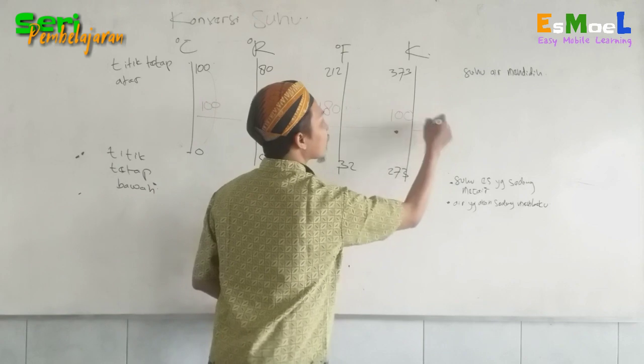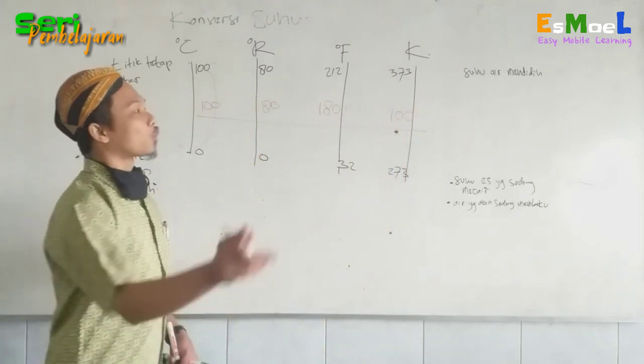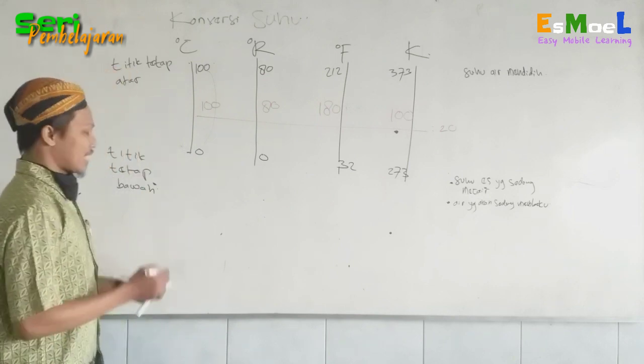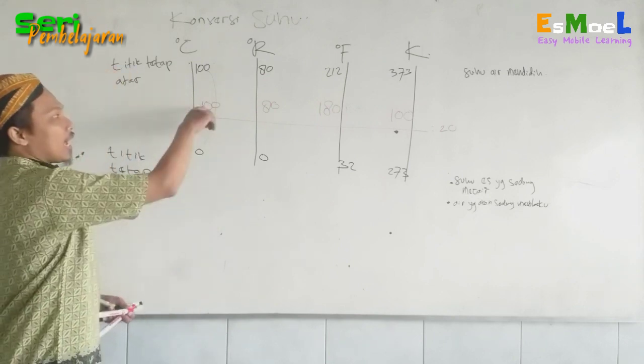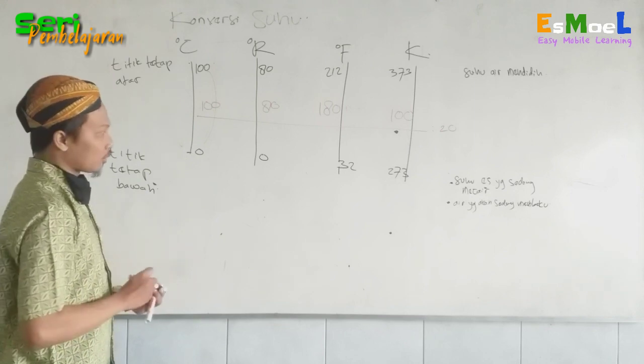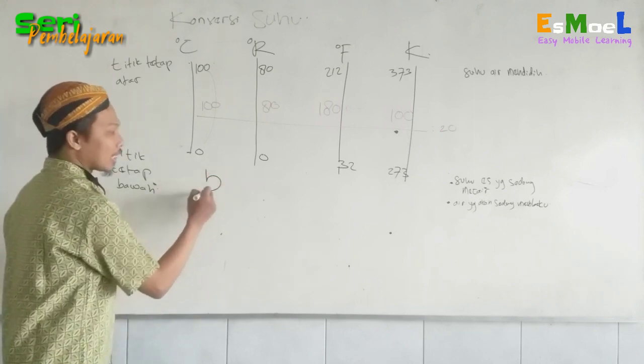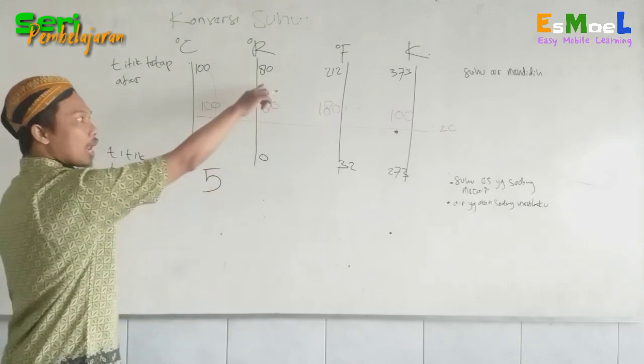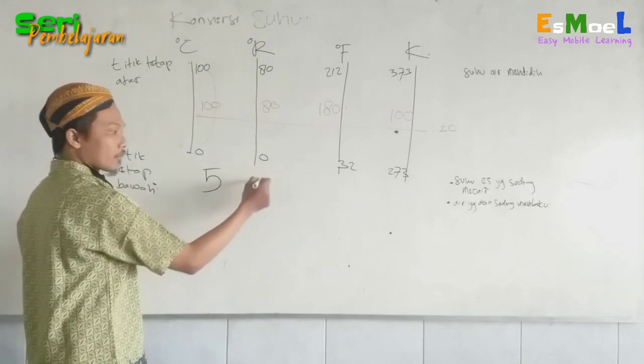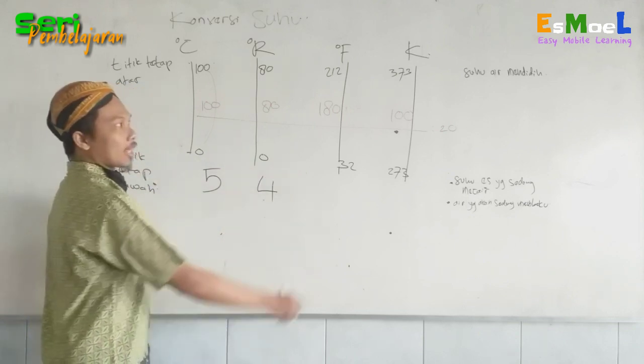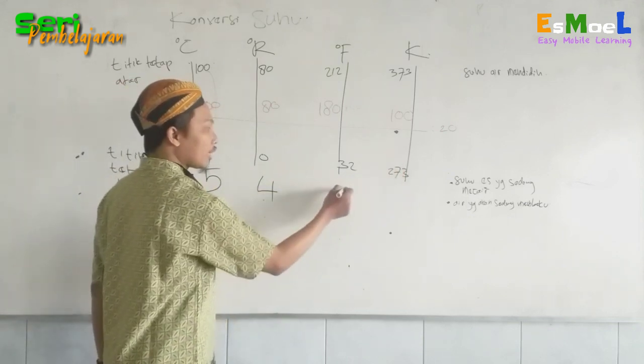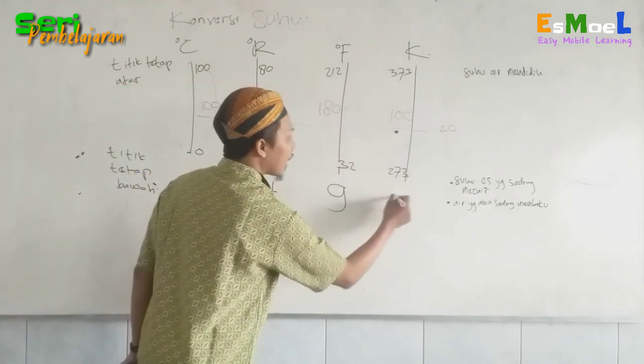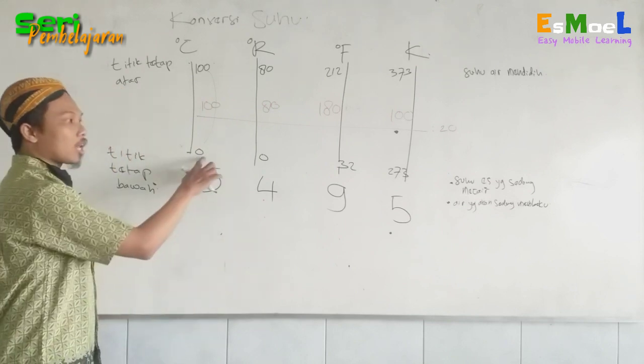Ini semuanya dibagi dengan berapa, coba? 20. Akhirnya ketemu perbandingan di sini. Angka 100 dibagi 20 ketemu 5. 80 bagi 20 adalah 4. 180 bagi 20, ketemu 9. 100 dibagi 20 sama dengan 5.